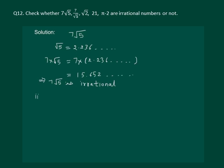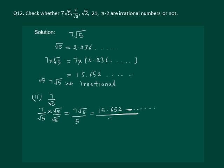The second part of the question says to check whether 7 by root 5 is irrational or not. We will rationalize 7 by root 5 by multiplying numerator and denominator both by root 5. We get 7 root 5 whole by 5, since root 5 into root 5 gives us 5. This is the same as 15.652 whole divided by 5, which will give us a non-recurring, non-terminating number. Hence we can say that 7 by root 5 is irrational.